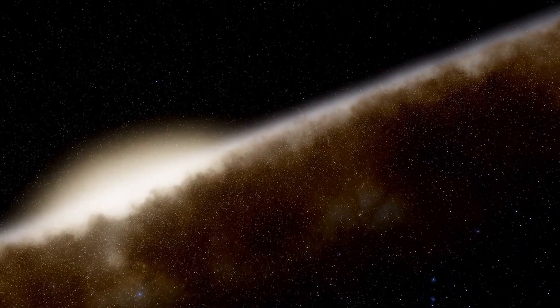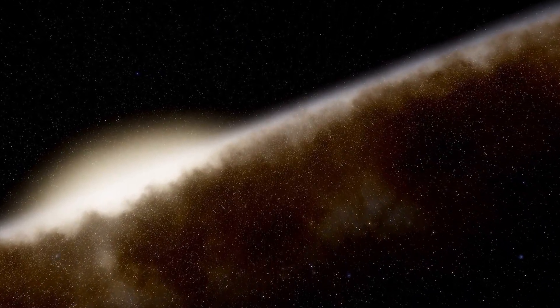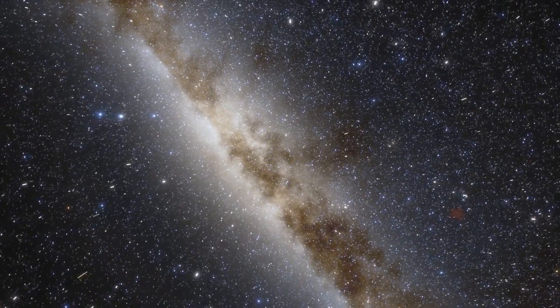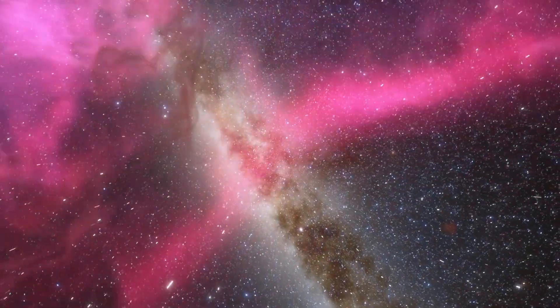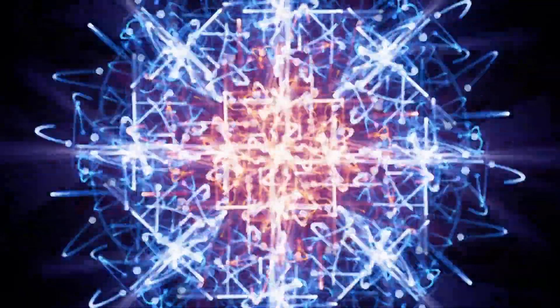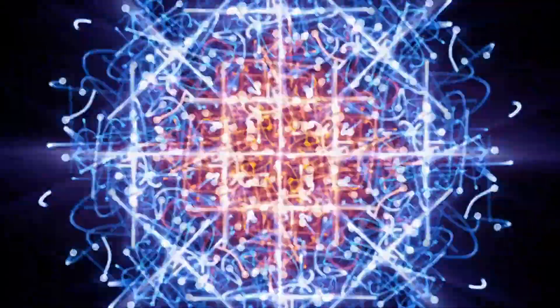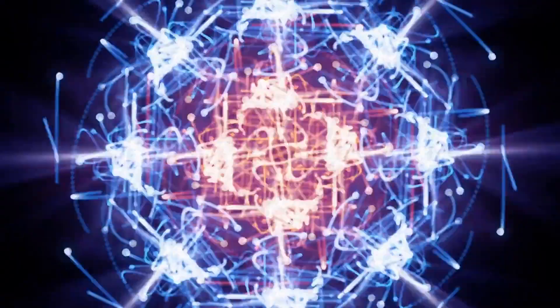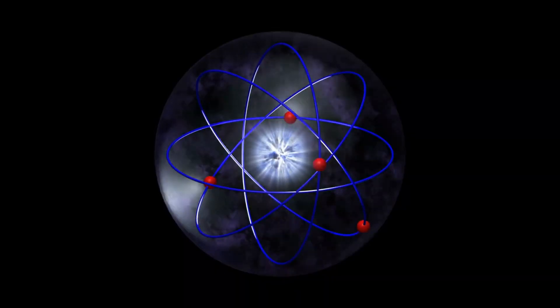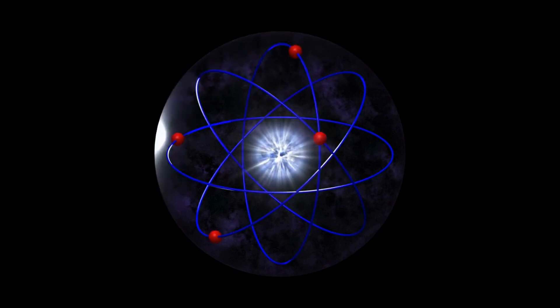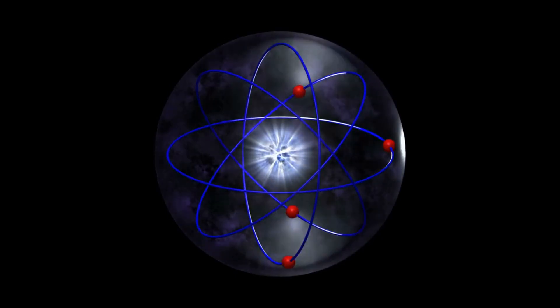One of the most fascinating aspects of the Big Bang Theory is that it provides a natural explanation for the origin of the universe as a whole. According to the theory, the universe began as a singularity — a point of infinite density and temperature. At this point, the universe was thought to be smaller than a single atomic nucleus, yet it contained all the matter that would eventually make up everything we observe today. As the universe expanded and cooled, it went through a series of stages that led to the formation of stars, galaxies, and planets.